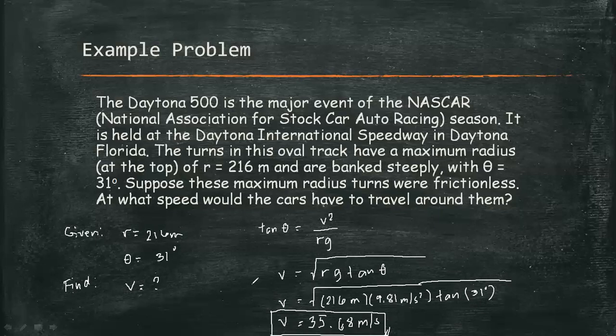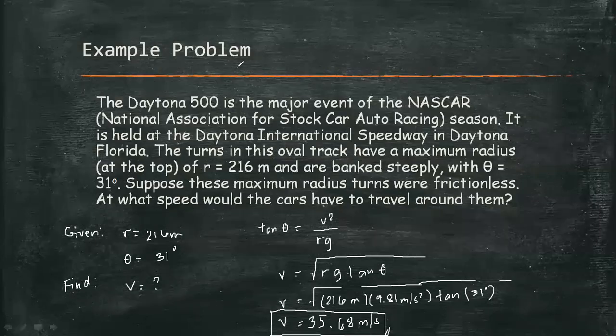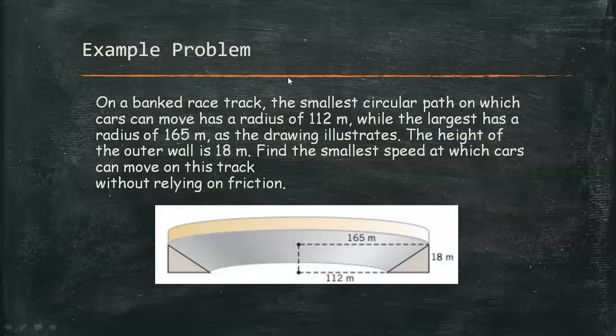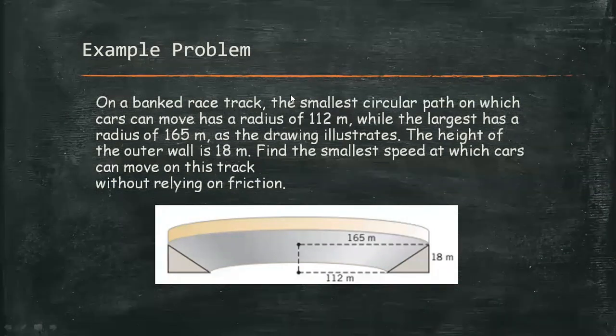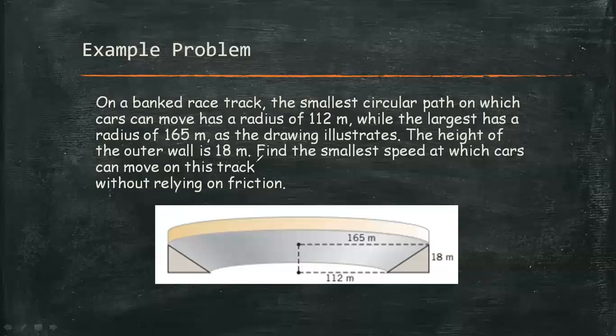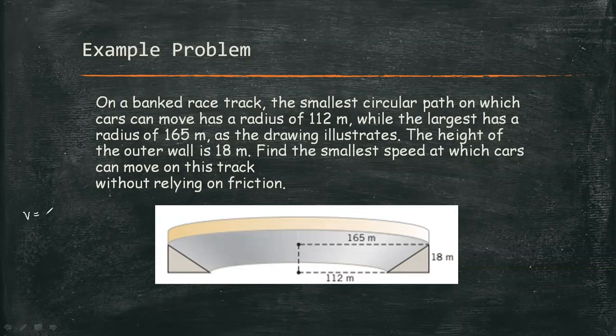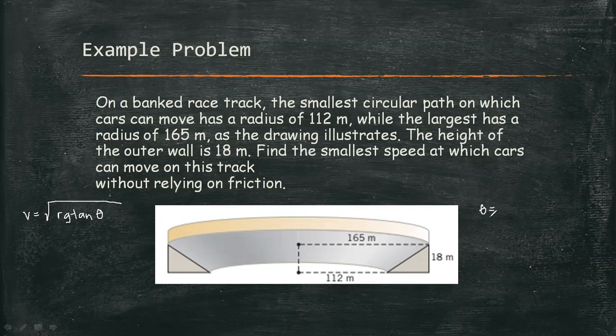So let's have another example problem. On a banked race track, the smallest circular path on which cars can move has a radius of 112 meters, while the largest has a radius of 165 meters, as the drawing illustrates. The height of the outer wall is 18 meters. Find the smallest speed at which a car can move on this track without relying on friction. So we're looking for the speed, and speed is equal to square root of rg tangent theta. So what's the value of our radius and theta? So first let's get angle theta.